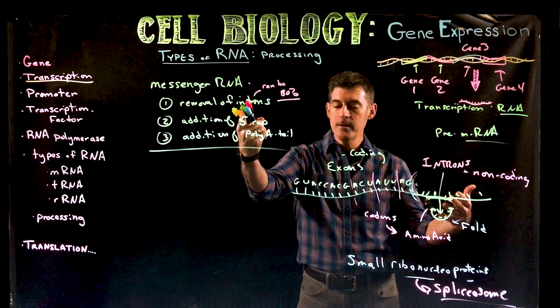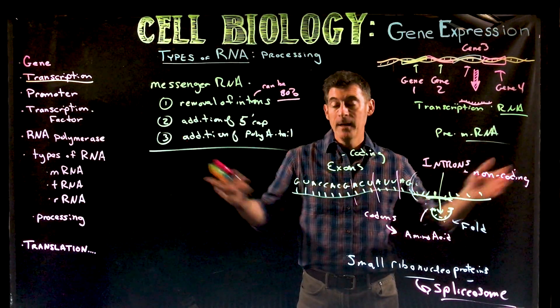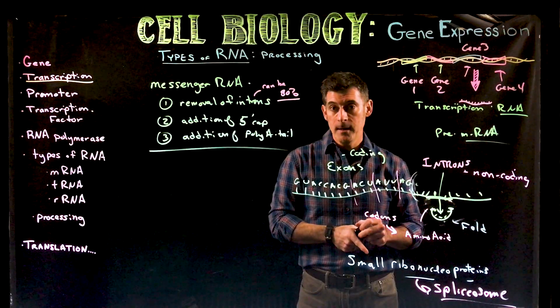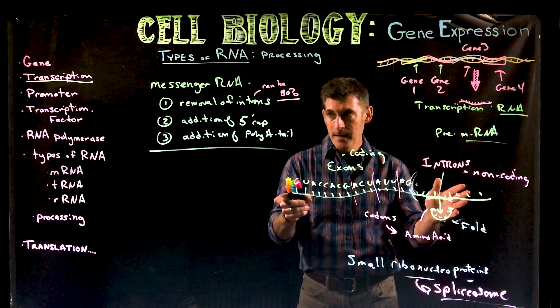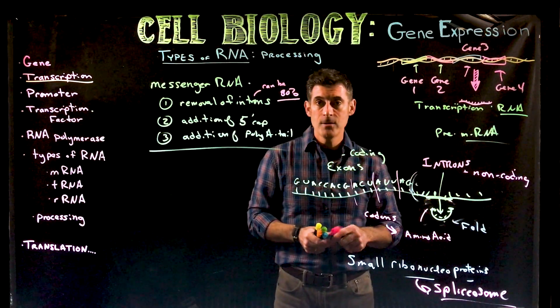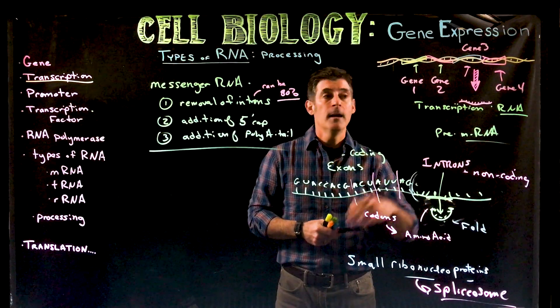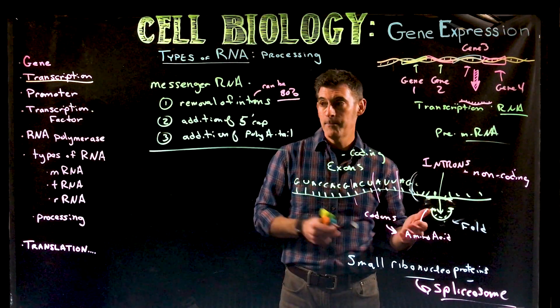There's a lot more detail that could be covered — how the spliceosome finds the specific beginning and end of introns, the GU-AG rule, and other details. But what we need to know right now is the basic terminology and overview: the RNA is edited, pieces are cut out, the spliceosome does the work, and then puts all the coding pieces — the exons — back together again. That's the first part: removal of introns, which could be one or many. Once that's done, there are still more modifications needed.